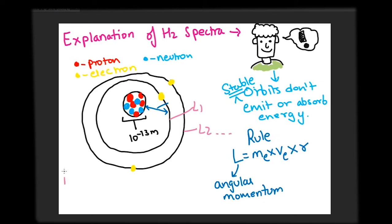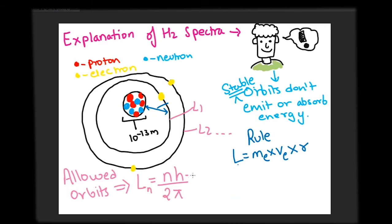According to Bohr, the allowed orbits had the following relation for angular momentum: L is equal to n into h upon 2π, where n is the number from 1 onwards and h is the Planck's constant.